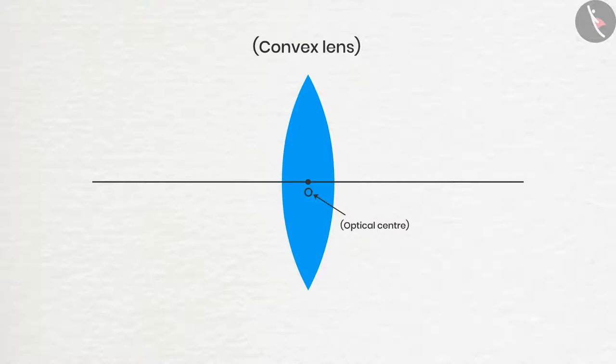As they have two surfaces, they have two focuses too, which are represented by F1 and F2. Twice the distance from O to F1 and F2 are called 2F1 and 2F2 respectively. And just like a mirror, all these points are found on the principal axis.